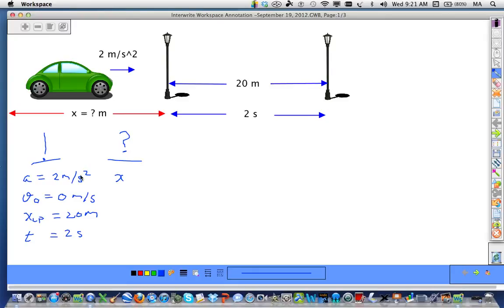As I list these knowns and unknowns, you kind of get a sense of which basic kinematic equation you're going to use. Any time you're given an acceleration, a velocity, a distance, and a time, more importantly distance and time, that pretty much zeroes it down to the third basic kinematic equation.